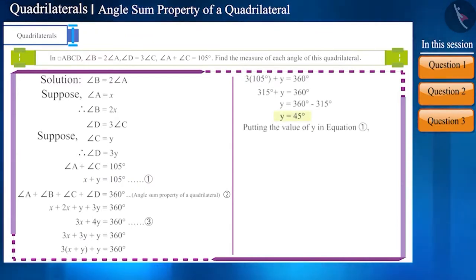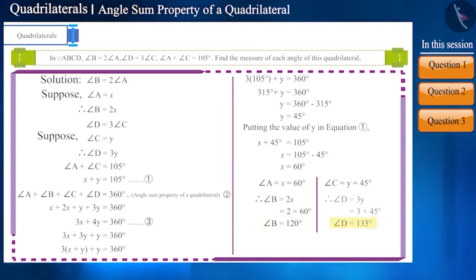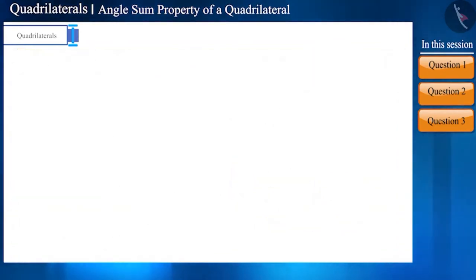Now, by putting the value of Y in equation 1, we can find the value of X. That is, angle A is equal to X is equal to 60 degrees and angle C is equal to Y is equal to 45 degrees. And angle B and angle D will be as follows. Angle B equals 120 degrees. Angle D equals 135 degrees. Thus, we got the measurement of all the angles.